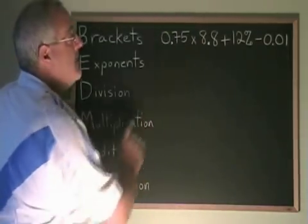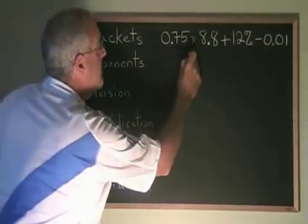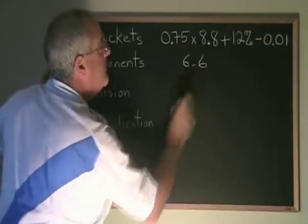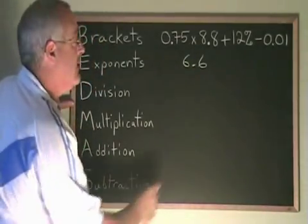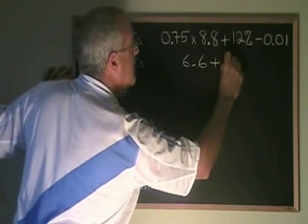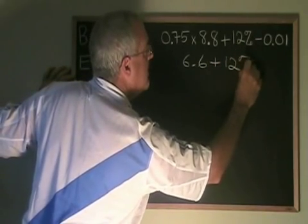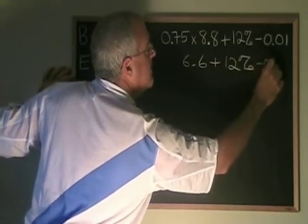0.75 times 8.8 is equal to 6.6. And then we copy down the rest of the problem, plus 12 percent minus 0.01.